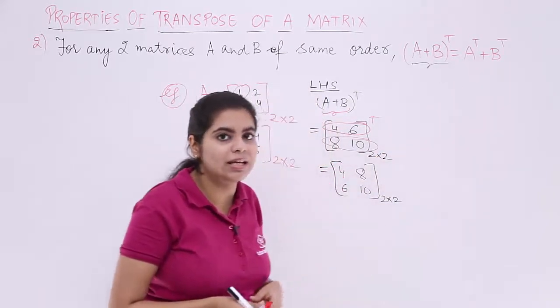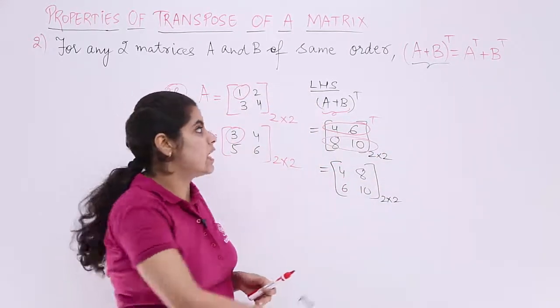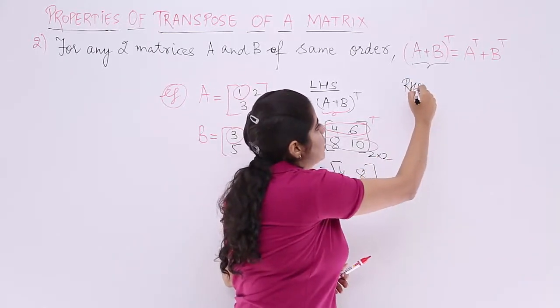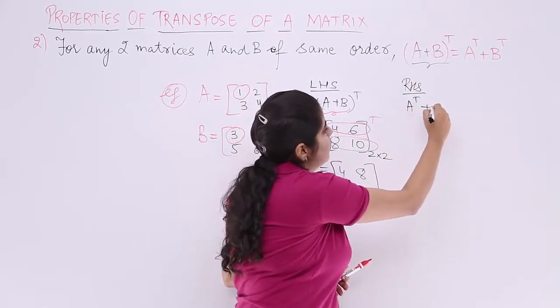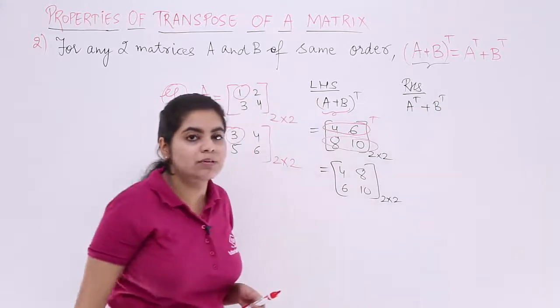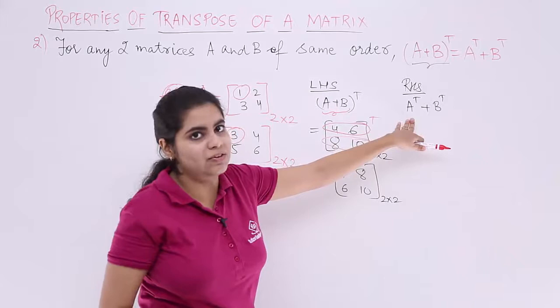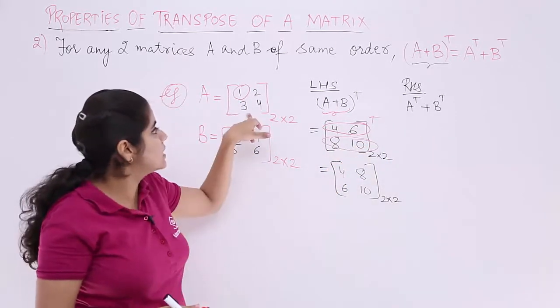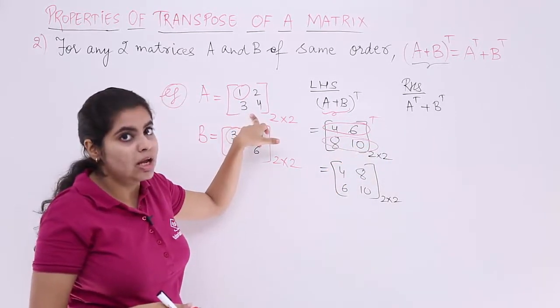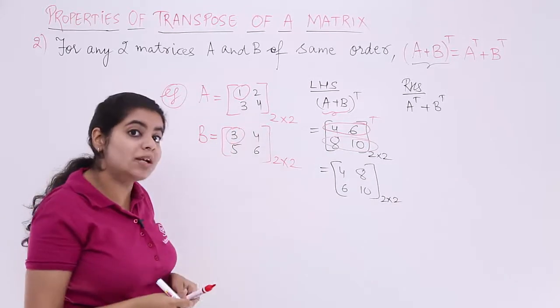Now we are not supposed to end here. We basically have to go to the other side. That other side is RHS. Let's make the heading as RHS. And it is A transpose plus B transpose that we are supposed to do. A transpose plus B transpose means what? First, you find out A transpose. Where is A? A is here. It is 1, 2, 3, 4. You have to find the transpose. What is A transpose?